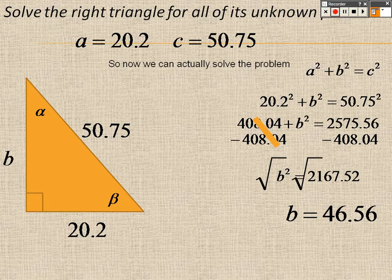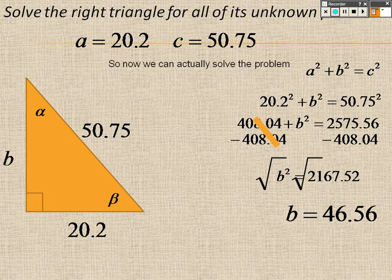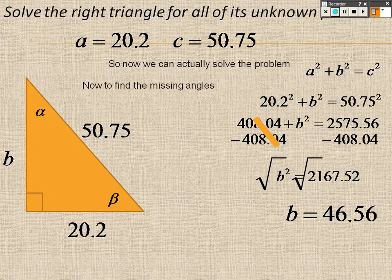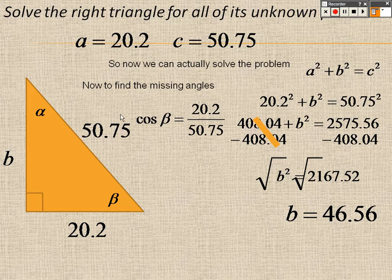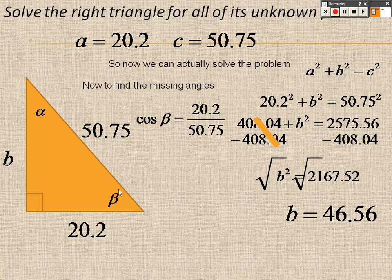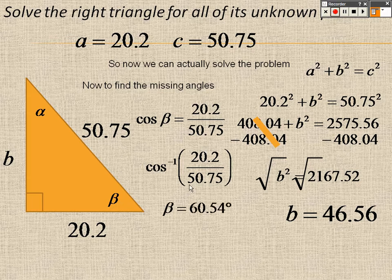Because I know all the side lengths, now when I go to solve the problem, I can use the inverse tangent, inverse sine or inverse cosine of everything in order to get the answers. So that's that negative 1. So I can do sine of negative 1, or cosine of negative 1, or tangent of negative 1, in order to get the right answers. So to find the angle, I'm going to do cosine of β. Cosine is adjacent over hypotenuse. So I would do cosine of negative 1 of 20.2 over 50.75. That gives me 60.54 for β.